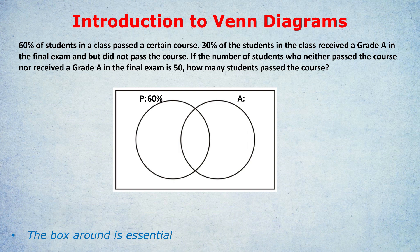30% of the students received a grade A but did not pass the course. That's not a total — it's telling us something about inside the bubble. They're definitely inside the grade A bubble, but they did not pass the course, so they're not inside the P bubble. It would go inside, not on top. It didn't say '40% of the students received a grade A' — that would go on top. It said 30% received a grade A but did not pass, meaning they're in bubble A but not in the overlap region. Every step is crucial, so if you're confused, pause and re-watch.